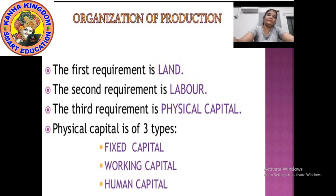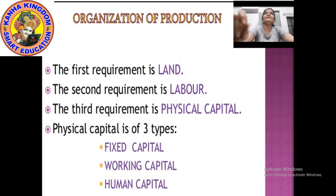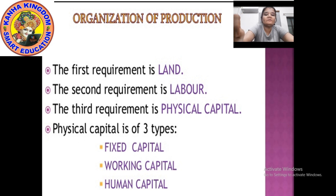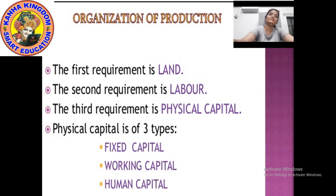The fourth main requirement — though it is counted under physical capital — is the one without which the other three are not going to work, and that is human capital. Try to understand human capital very carefully, because this is your second chapter for economics. What is human capital, what are the factors of physical capital, what are the four requirements of organization of production — such kinds of questions will be there.